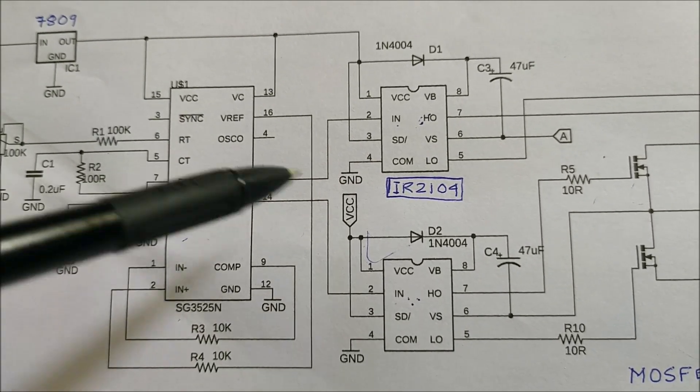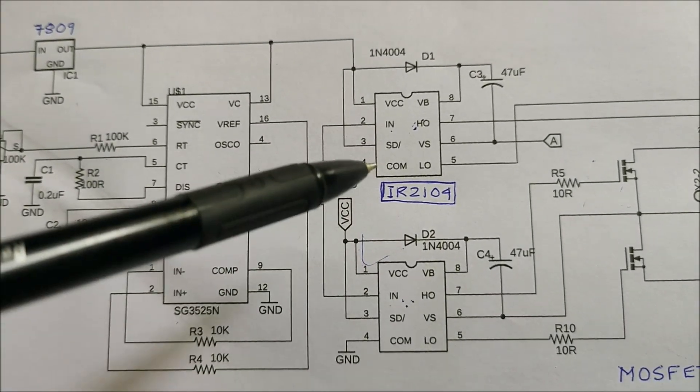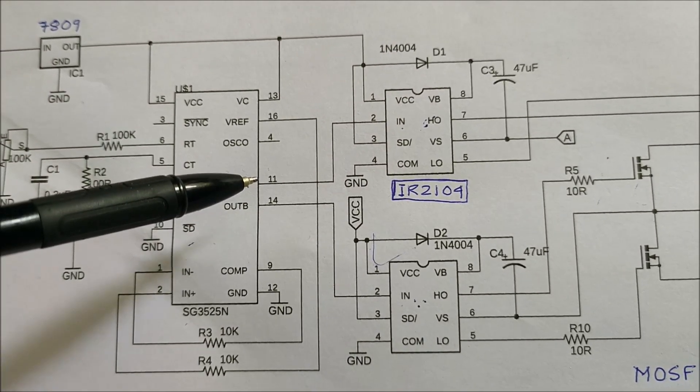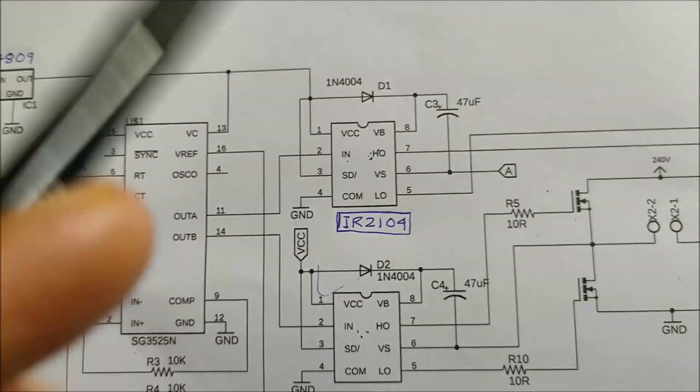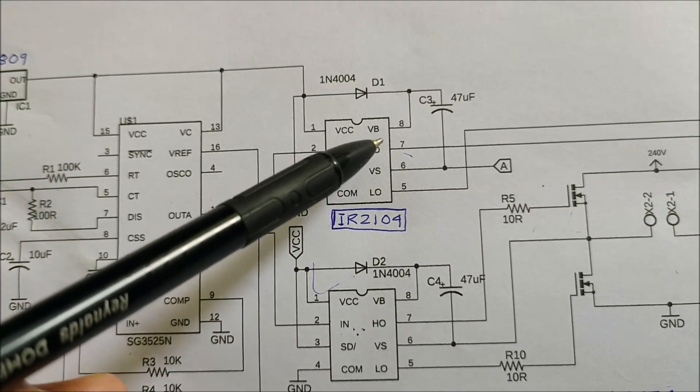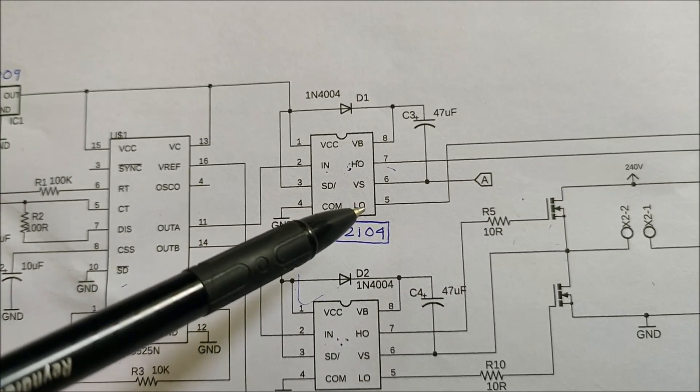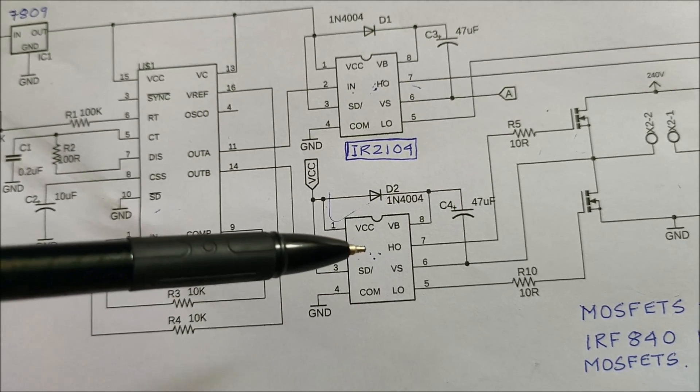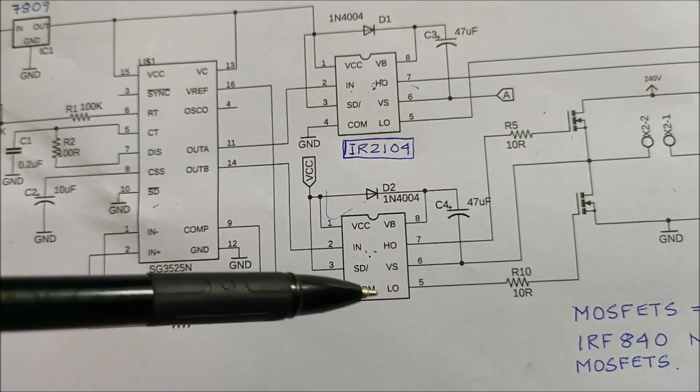The two signals from the SG3525 goes to the input of both the IR2104 MOSFET drivers. Now consider the case where pin 11 is high and pin 14 is low. In that case the high side MOSFET pin of the first MOSFET driver is active and the low side MOSFET pin is inactive. The reverse happens in case of the second MOSFET driver where the high side is inactive and the low side is active.